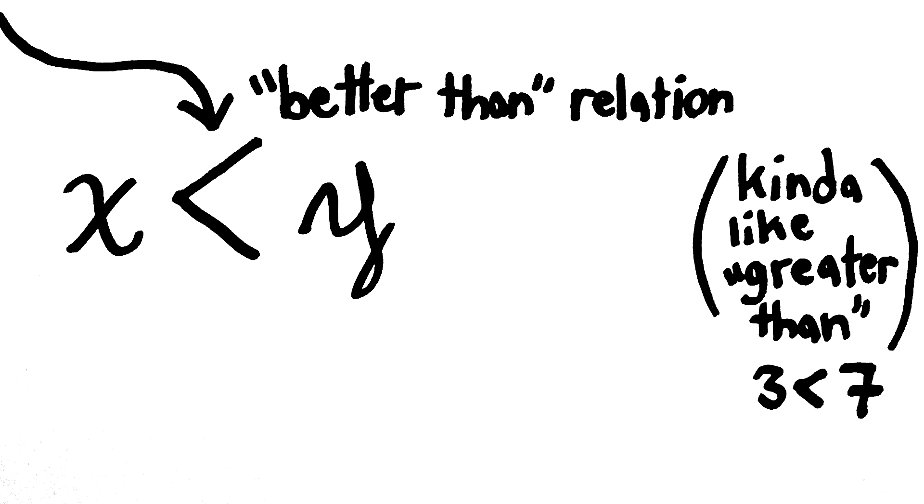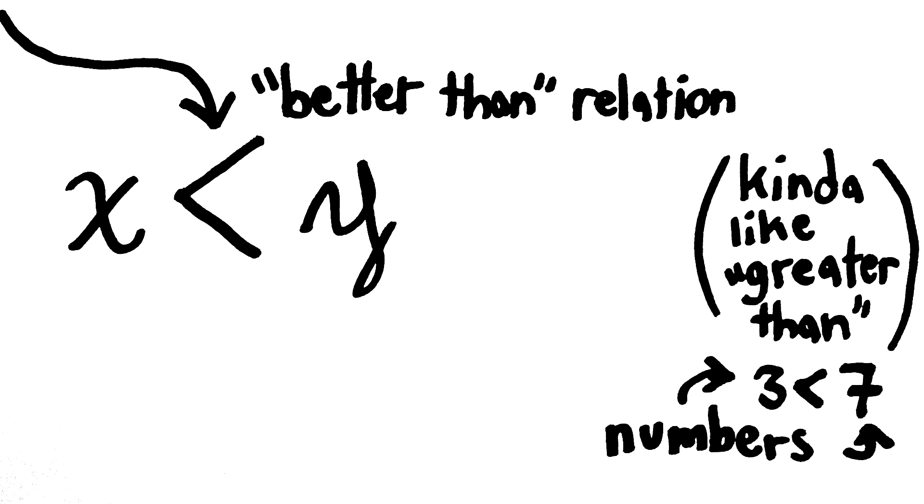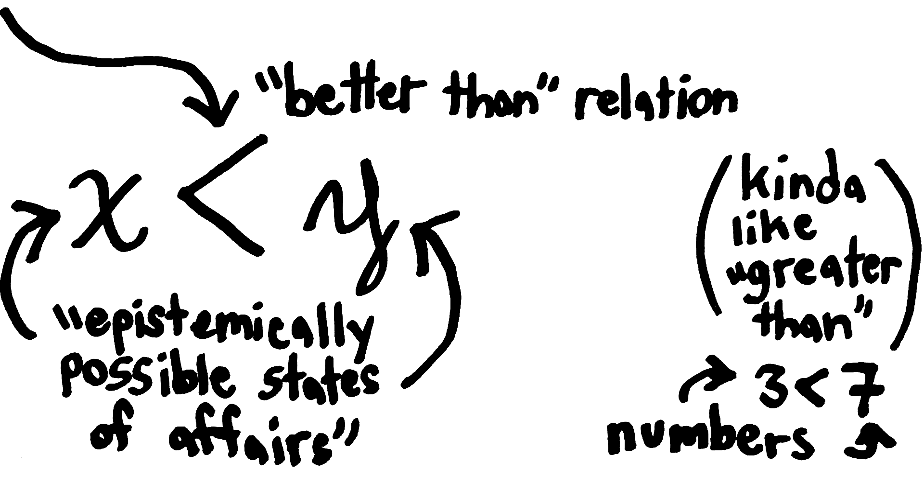With the greater-than relation, we plug in numbers, and we end up with a statement which is either true or false. With the better-than relationship, we plug in epistemically possible states of affairs. An epistemically possible state of affairs is basically just a way reality could possibly be as far as you know. So, God existing is an epistemically possible state of affairs, God not existing is also an epistemically possible state of affairs, and basically anything you can imagine. You might find these improbable, and they might be actually impossible, but as far as you know, it's something that could be true.